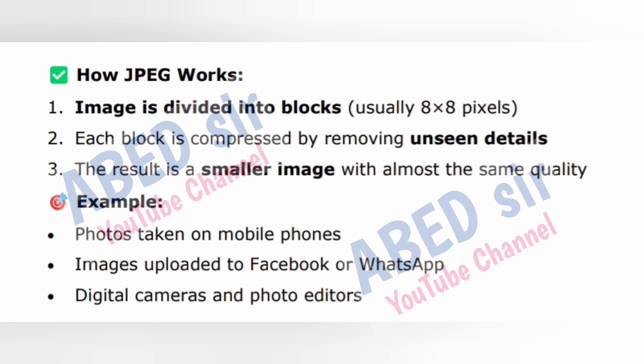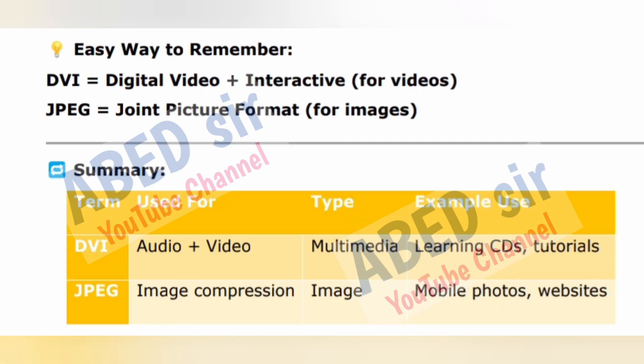Examples of JPEG use: photos taken on mobile phones; images uploaded to Facebook or WhatsApp; digital cameras and photo editors. Easy way to remember: DVI equals Digital Video Interactive for videos; JPEG equals Joint Picture Format for images. Summary: DVI is used for audio+video in multimedia learning CDs and tutorials; JPEG is used for image compression in mobile photos and websites.